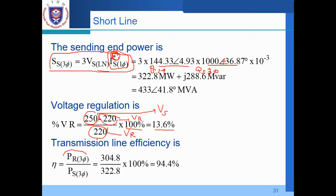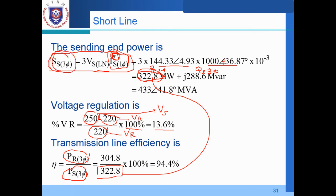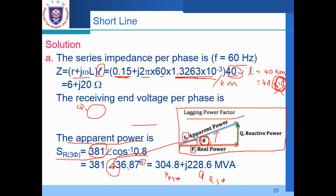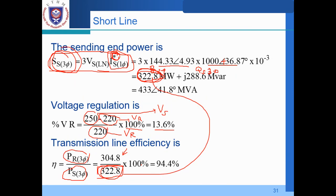For transmission line efficiency, PS equals 322.8 MW (from the sending end power calculated above), and PR is the receiving real power obtained from converting the apparent power 381 MVA at 0.8 pf lagging from polar to rectangular form at the start of the analysis. These two values are used to compute the efficiency of the transmission line.